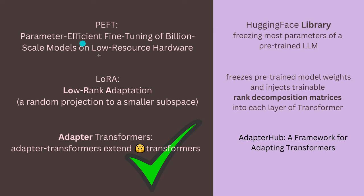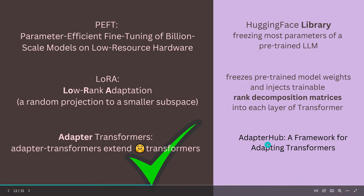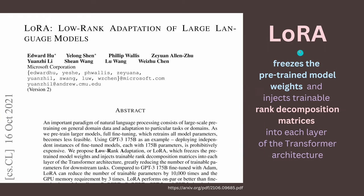PEFT is the HuggingFace library, and you can now see that PEFT and the Adapter Hub are very similar libraries. On HuggingFace you have all the beautiful models and datasets available. LoRA — low-rank adaptation of LLMs — was published in October 2021. It does something we now know from the adapters: it freezes the pre-trained model weights and injects trainable elements into the layer structure of the transformer, exactly like an adapter.